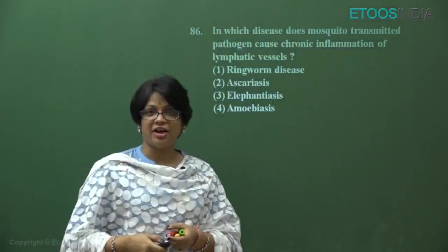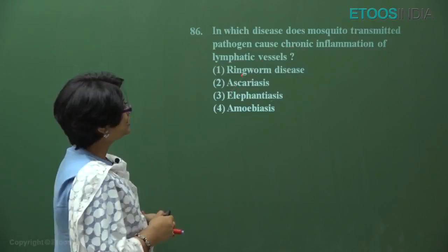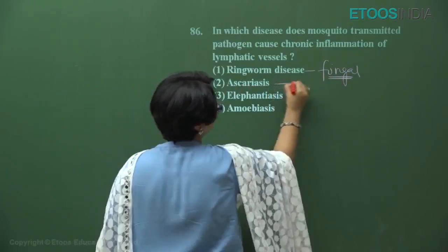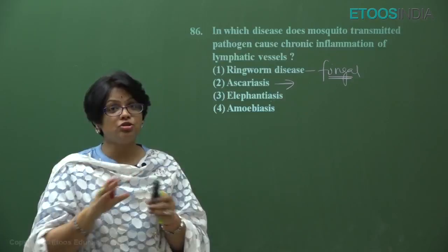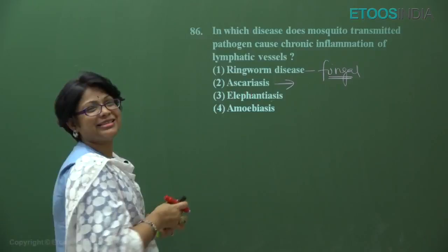Next question: RR code NEET 2018, question number 86 — in which disease does a mosquito-transmitted pathogen cause chronic inflammation of lymphatic vessels? Ringworm is a fungal disease with no mosquito transmission. Ascariasis is caused by Ascaris lumbricoides, a roundworm, transmitted by ingestion of its eggs — not by mosquito bite.